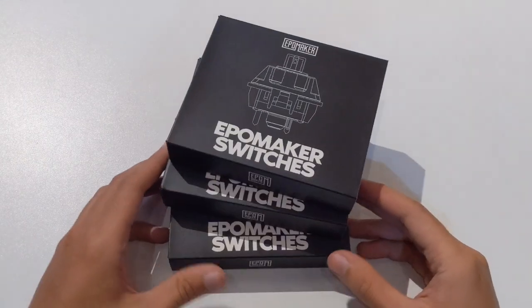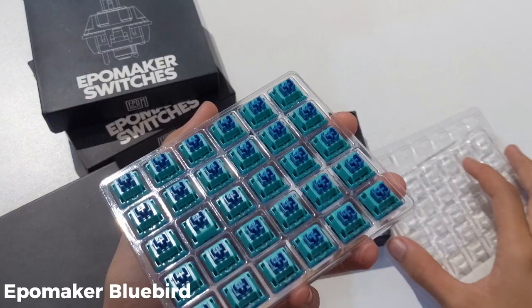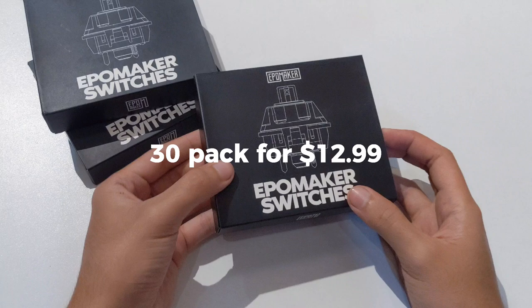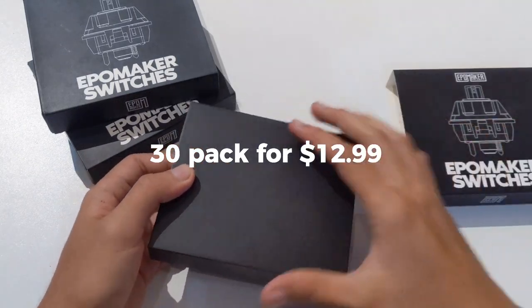Hi, these are some of the new switches from EpoMaker: the EpoMaker Bluebird, Flamingo, and the Budgiecar. They come as a pack of 30 for $12.99.